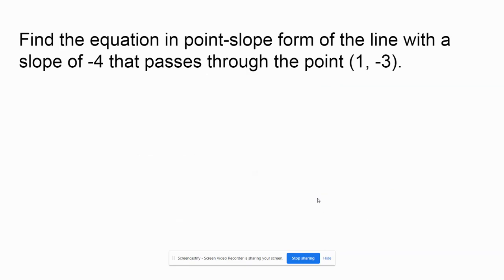Here's our first example. Find the equation in point-slope form of a line with a slope of negative 4 that passes through the point 1, negative 3. Well, they were nice. They told us our slope is negative 4, so that's what we're going to use for m. And they told us our point was 1, negative 3, so that's what we're going to use for x1 and y1.